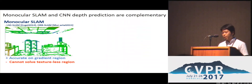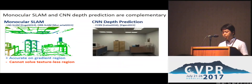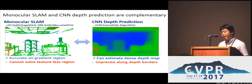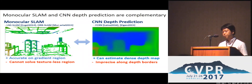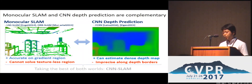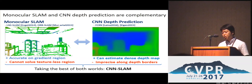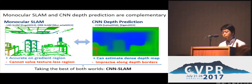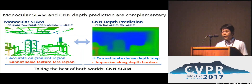Monocular SLAM is accurate on gradient regions, but it cannot handle texture regions. On the other hand, CNN depth prediction can estimate a dense depth map in texture regions, but it's imprecise around depth boundaries. From this observation, we propose a new SLAM framework to take the best of both worlds by fusing monocular SLAM with monocular depth prediction, called CNN SLAM.